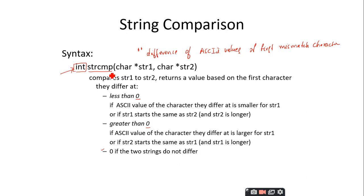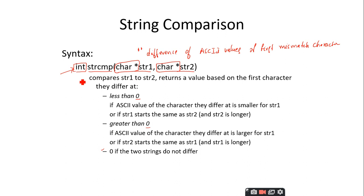The string comparison function takes two inputs — one is a string and the second one is also a string. char* is a pointer to a character used to define or declare a string variable. Similarly, str2 is also a character pointer, meaning we are taking another string as the second parameter. Overall, strcmp compares the two input strings and returns an integer value — it can be positive, negative, or zero. When it returns negative, when it returns positive, and when it returns zero — we will discuss this in a while.